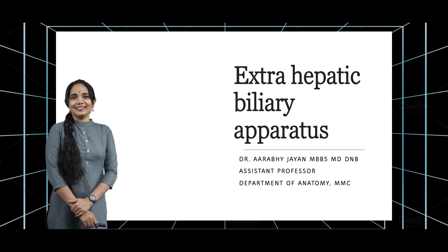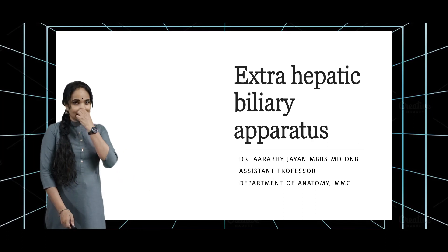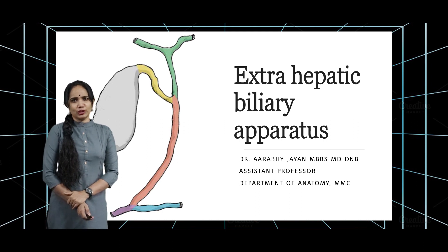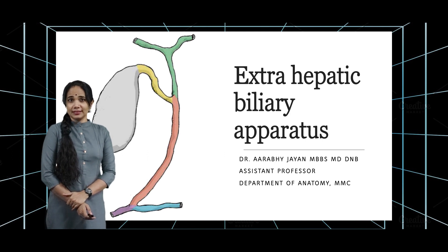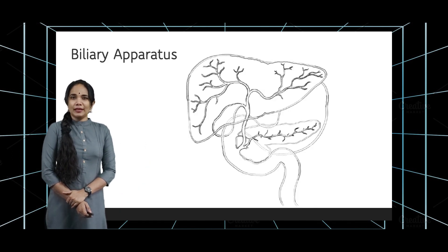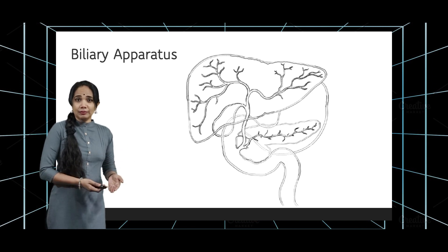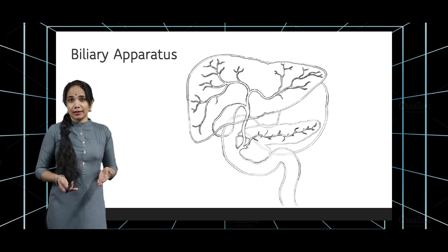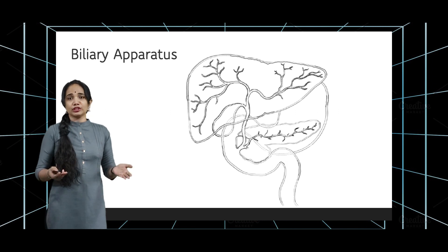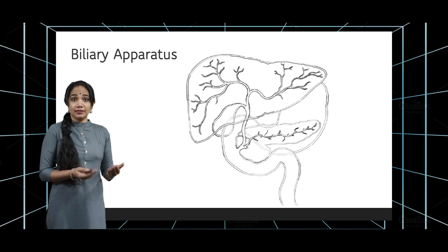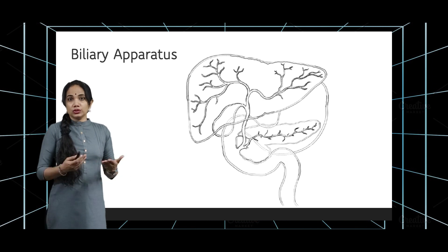Hello everybody. Let us talk about the extrahepatic biliary apparatus. This is a pretty simple and straightforward topic and we will be seeing the components of the extrahepatic biliary apparatus in this first video. The biliary apparatus can be classified into an intrahepatic biliary apparatus and an extrahepatic biliary apparatus, and their main function is to transport the bile produced in the bile canaliculi within the liver to the duodenum to aid in digestion.